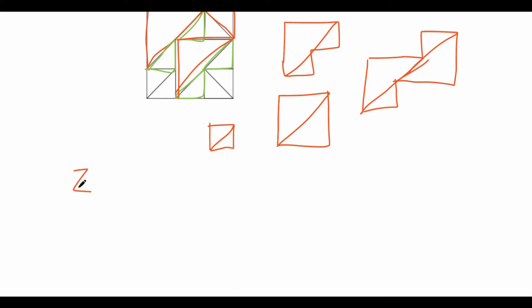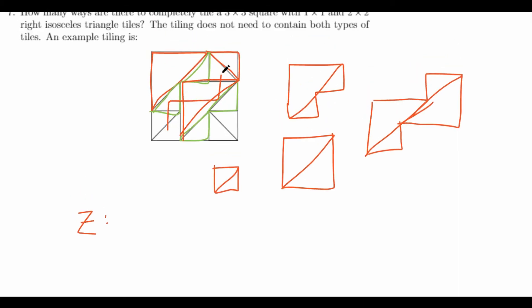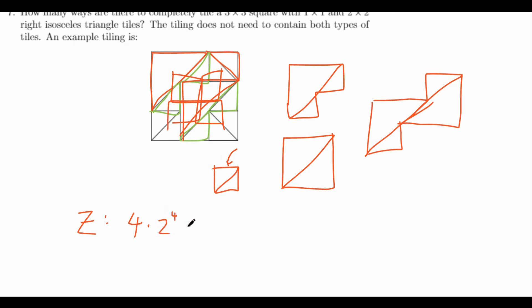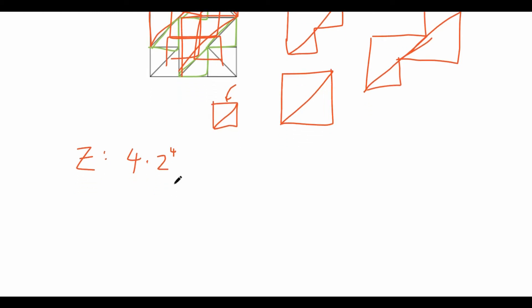First, let's consider the Z-tile. The Z-tile can be oriented in four different ways. So we multiply by four. Since the Z-tile takes up five unit squares, we have four 1×1 squares remaining, and these can only be filled by 1×1 tiles. Each of these 1×1 tiles can be oriented in two ways, so we multiply by 2 to the power of 4. That's the case of the Z-tile: 4 × 2⁴.